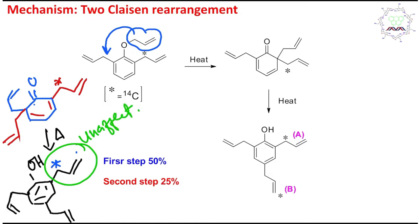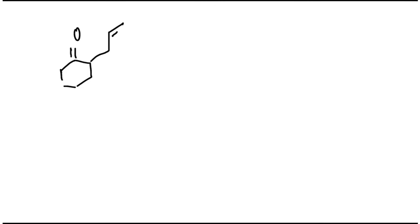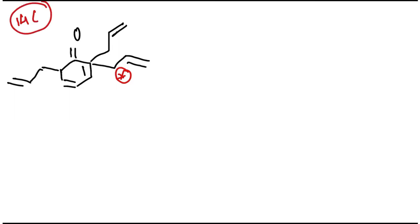For the second option, as I mentioned, the allyl group could be shifted to the other position. Here an important point: there is a 50% chance for this site and 50% chance for the other site. Now for the second pathway, we start from this intermediate. There is one C-14 label — remember this is carbon-14, an isotope. Isotopes have similar chemical properties, so migration from either carbon has equal probability: 50% and 50%.